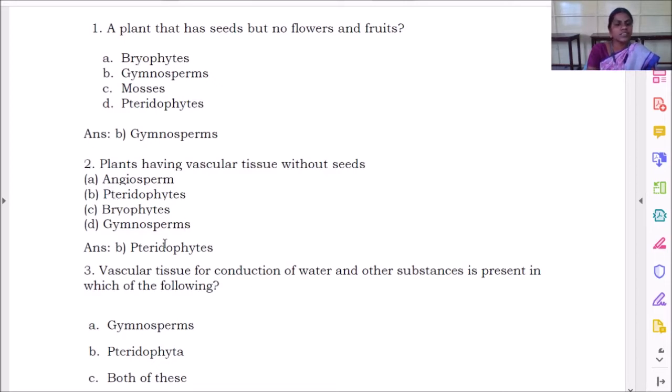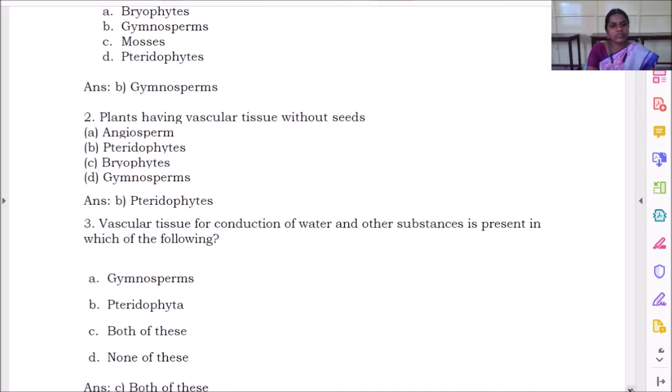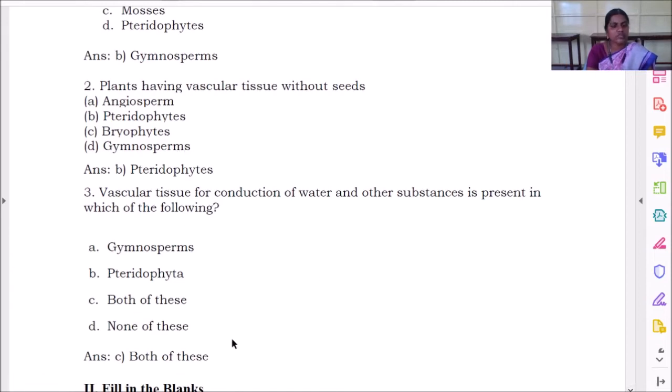The next question is: Vascular tissue for conduction of water and other substances is present in which of the following? We have gymnosperms, pteridophytes, both of these, none of these. Which one will be the right answer here?